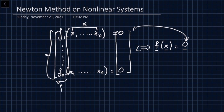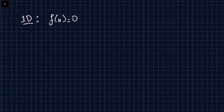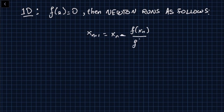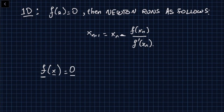The goal is to solve this system using Newton's method. Recalling the one-dimensional case: if we're solving f(x) = 0 where f and x are 1D, Newton runs as x_{n+1} = x_n - f(x_n) / f'(x_n). Our system is written compactly as f̄(x) = 0, where f and x are vectors — this is the ND case.